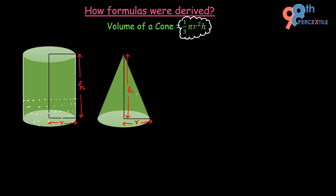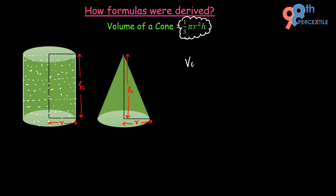Again fill the cone with liquid and pour it into the cylinder — it fills up to a second point. Fill the cone a third time and pour it in, and you will realize the cylindrical object is now filled to its brim. This means the volume of the cylinder is three times the volume of the cone.